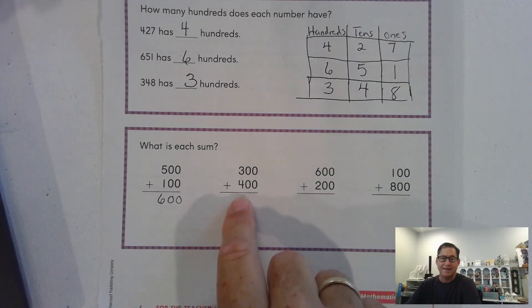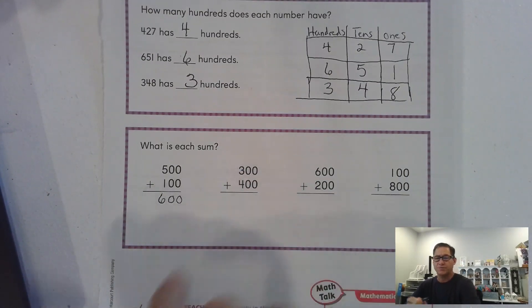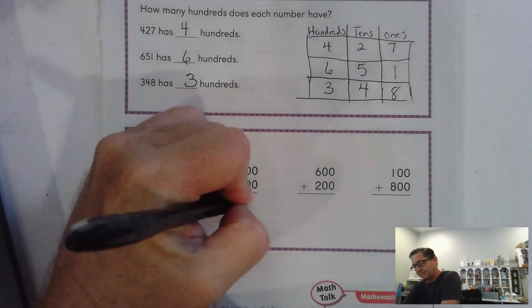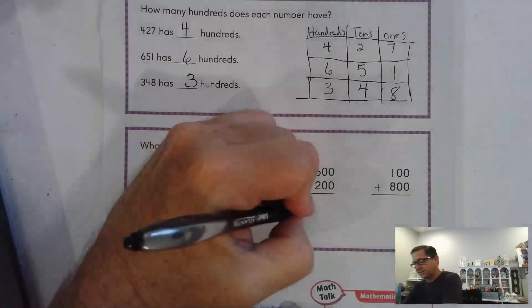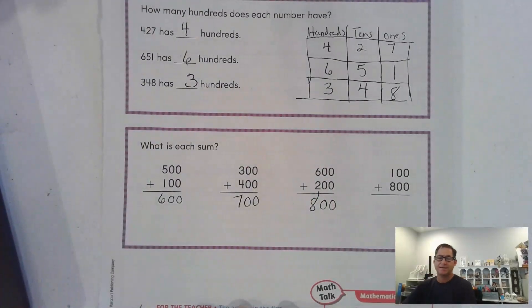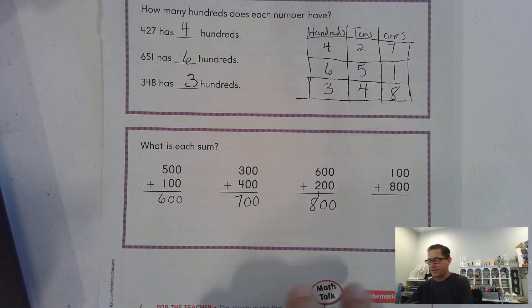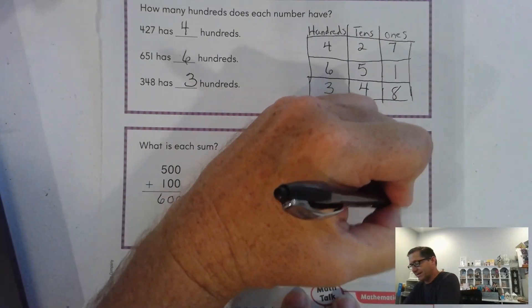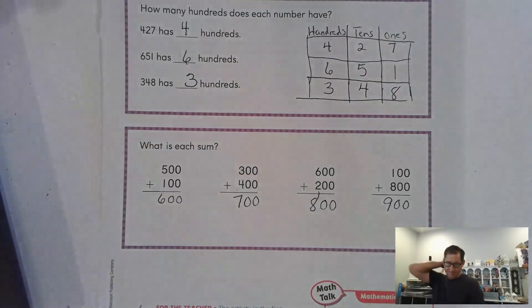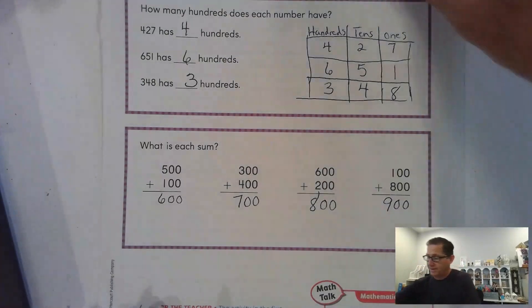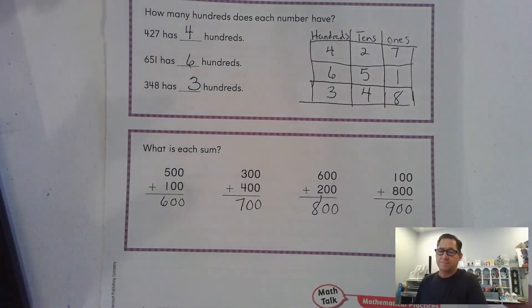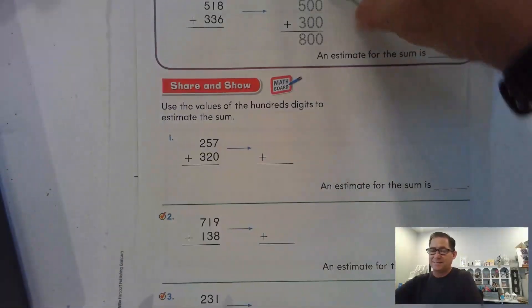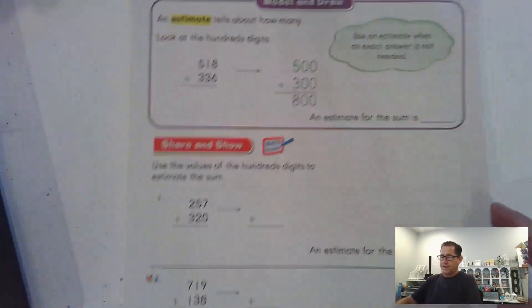400 plus 300. Again, just add the hundreds. And 4 plus 3 is a basic math fact. 700. 600 plus 200. Just add the hundreds. 6 and 2 is 8. So, 800. 800 and another 100 is 900. So, fairly simple review there, right? So, that's what we're going to do to find estimates.